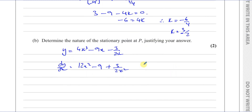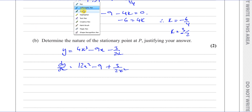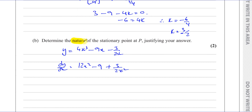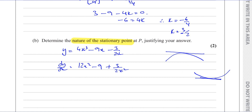To find the nature of the stationary point, we need to know how the gradient is changing. When they say determine the nature, they're basically asking: is it a maximum or a minimum? Is it a turning point where the gradient becomes zero at the highest point or the lowest point? So is it a maximum — which looks like an arch — or a minimum — which looks like a valley? We find this using the second differential.